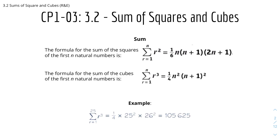And for the cubes — the formula for the sum of cubes of the first n natural numbers is: the sum of r cubed from r equals 1 to r equals n equals one-quarter times n squared times (n+1) squared.